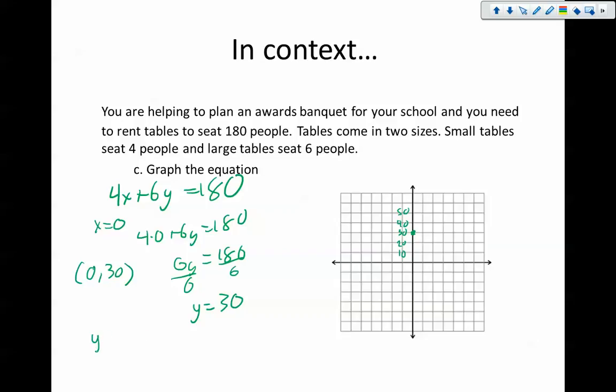Do the same thing for the X-intercept. Y equals zero. This is 4X plus 6 times zero equals 180, or 4X equals 180, or divide everything by 4. I get 180 divided by 4. So my X equals, 160 divided by 4 is 40, but I do that five more times, so that's 45, I believe. So my other point is 45, 0.